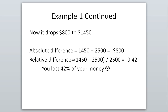Now let's say another year passes and your account drops to $1,450 from $2,500. The absolute difference is new minus old: $1,450 minus $2,500 equals negative $800, showing your portfolio dropped by $800. The relative difference is ($1,450 − $2,500) ÷ $2,500 = negative 0.32, meaning you lost 32% of your money that year. That's not good.